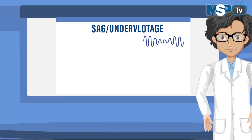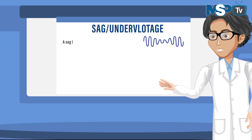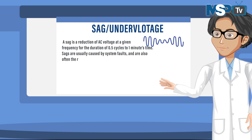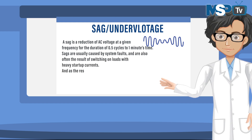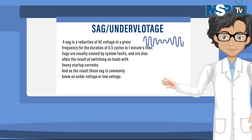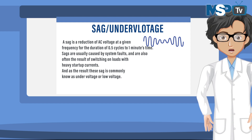The third problem is sag or under voltage. A sag is the reduction of AC voltage at a given frequency for a duration of 0.5 cycles to one minute. Sags are usually caused by system faults and are also often the result of switching on loads with heavy startup currents. As a result, sag is commonly known as under voltage or low voltage.